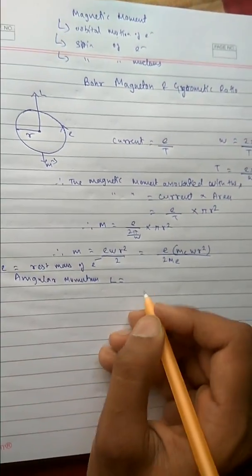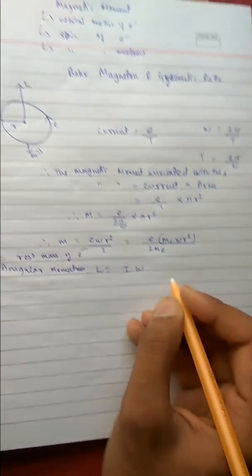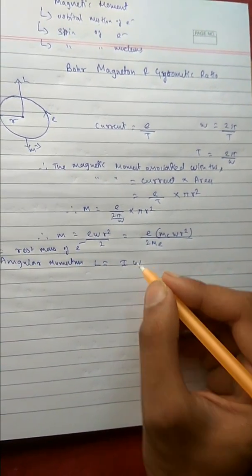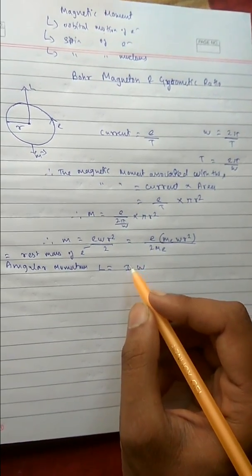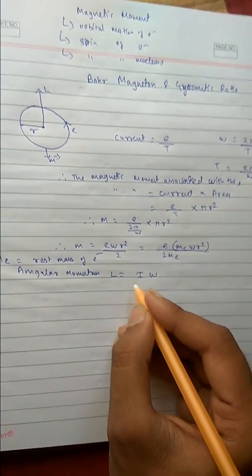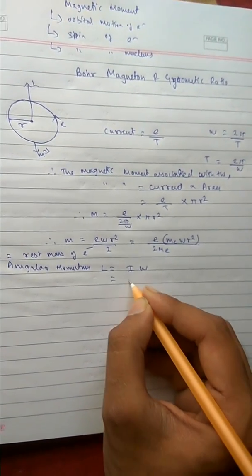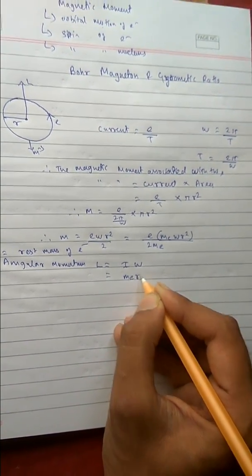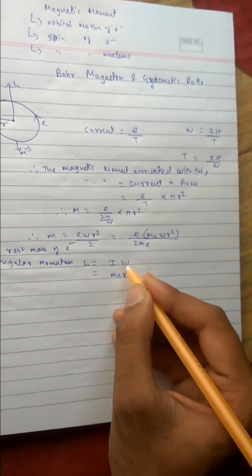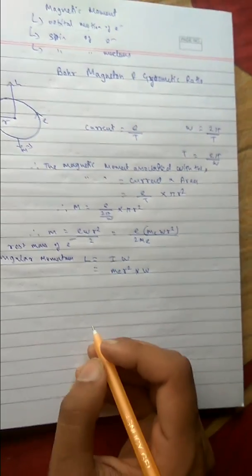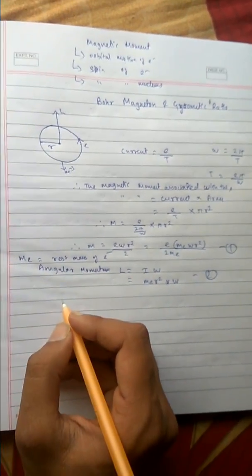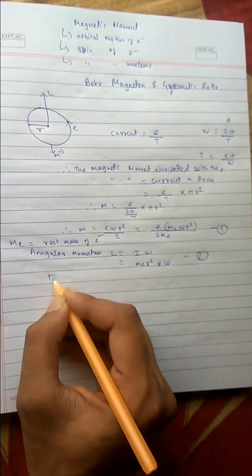The angular momentum L equals I·omega, where I is the moment of inertia of the electron moving in this circular path. The moment of inertia is m_e·r², so L equals m_e·r²·omega. This gives us our second expression to use alongside the magnetic moment expression.